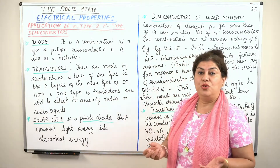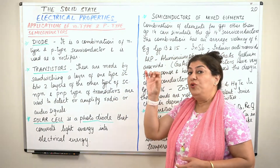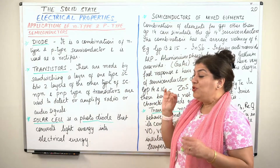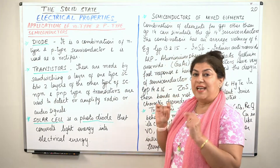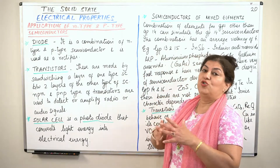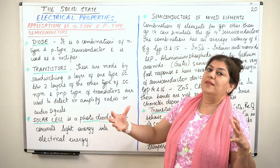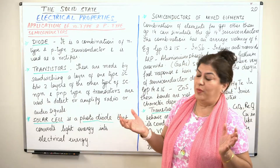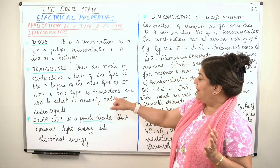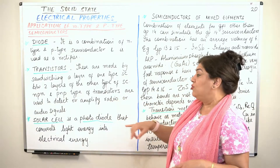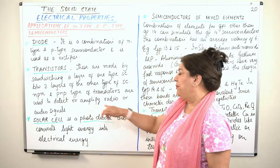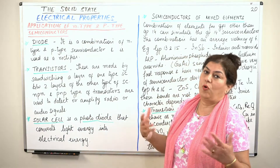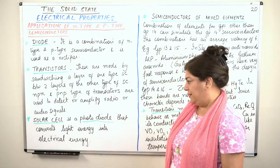What are transistors used for? You use a transistor to detect or amplify sound or radio waves. So transistors are used to detect or amplify radio or audio signals.